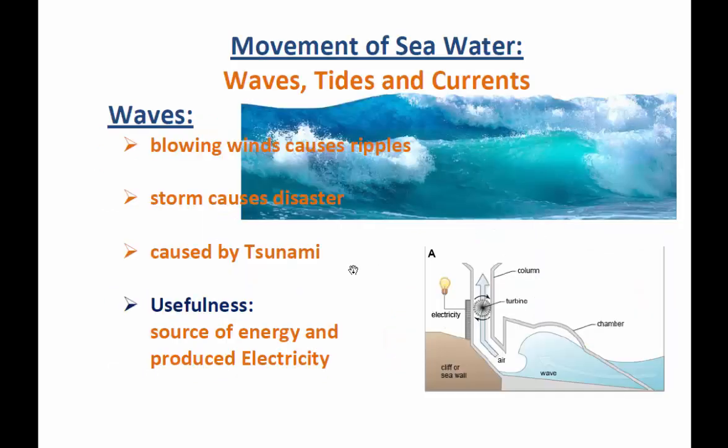Today in this class we will study about the movement of seawater or ocean water. As mentioned before, water on the surface of the earth is not static — it is always in motion, moving from one place to another, from one ocean to another, and from one region to another. The motions of ocean water are broadly divided into waves, tides, and currents.